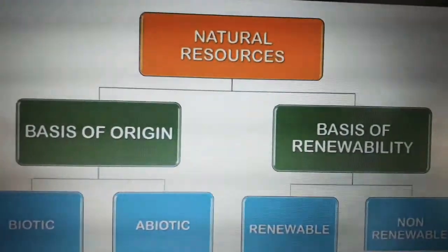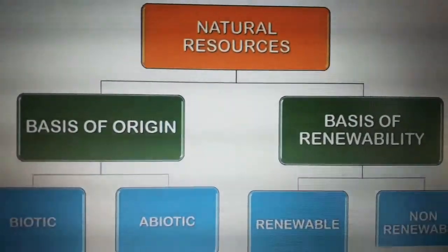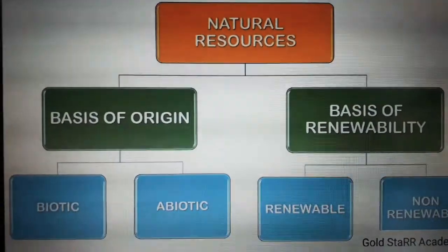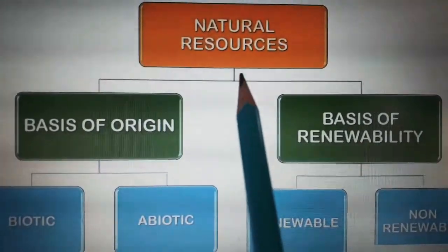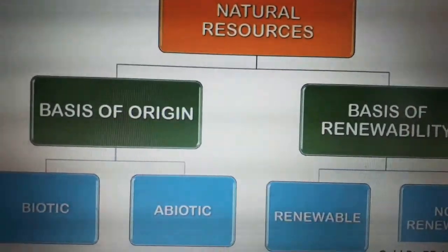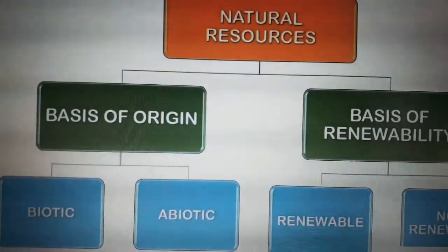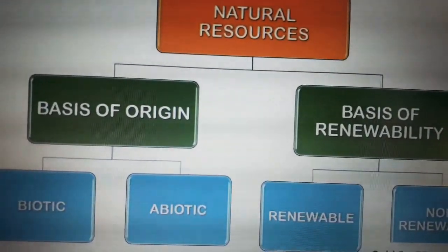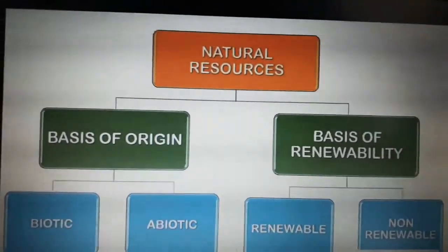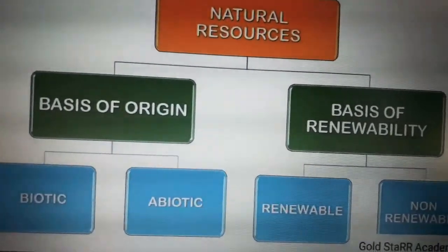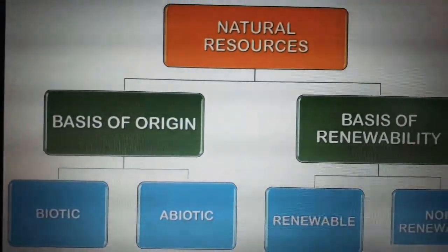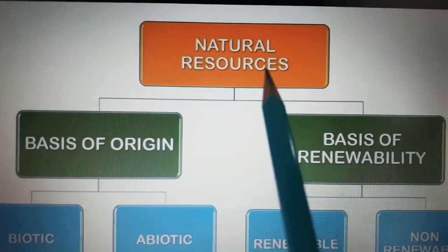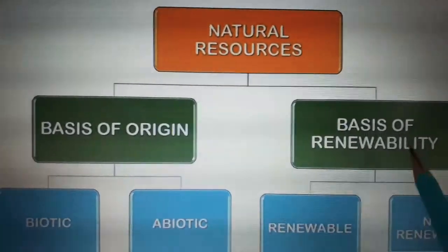Natural resources are normally classified into two: basis of origin and basis of renewability. Natural resources are resources that exist without the action of human hands — they are naturally obtained from the environment. Many natural resources are essential for humans, for example water, air, and land. These are classified into basis of origin and basis of renewability.